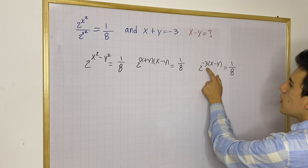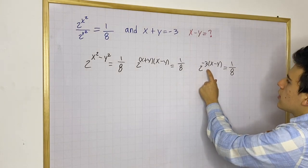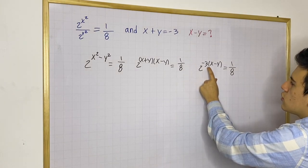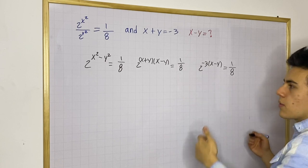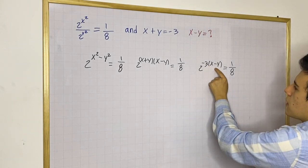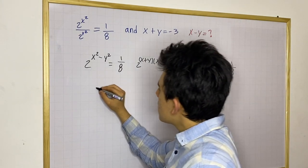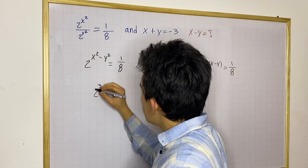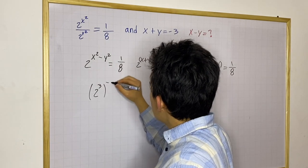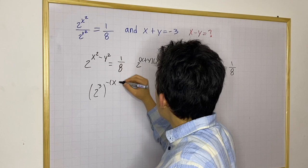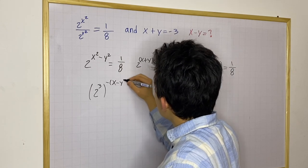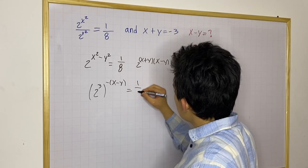Now, something we can do is we know there is a negative 1 in there. So we can just simply focus on the 2 to the third power, and then leave the negative 1 with the x minus y. So that would look like this: 2 to the third power, to the negative x minus y. And this is the same as 1 over 8.